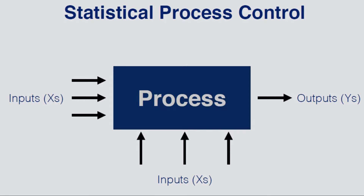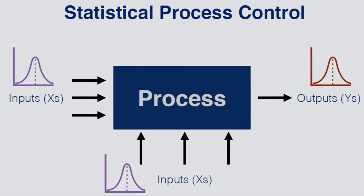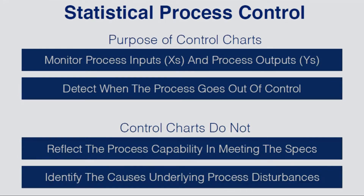A process has inputs and outputs. Inputs could be before the process begins or even during execution, and outputs are at the end of the process. There will always be some variation in the inputs — the X's — and it will result in variation in Y, or the output. Control charts can be used to monitor process inputs as well as process outputs, and they are also used to detect when the process goes out of control.